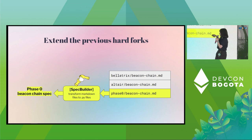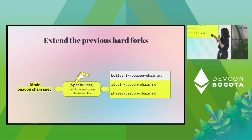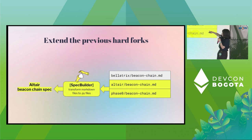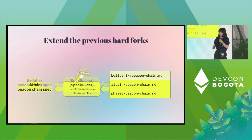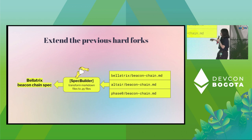Phase zero is the base layer of all consensus specs. If you want to understand Altair, you have to extend the phase zero spec with the new features in Altair. Similarly, Bellatrix has to merge all three of them.